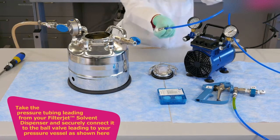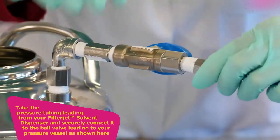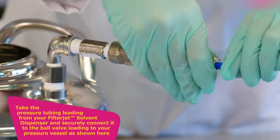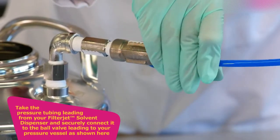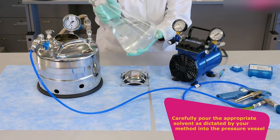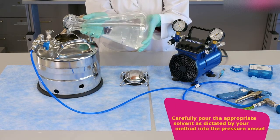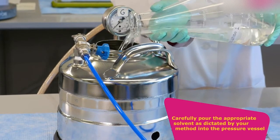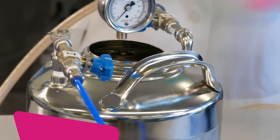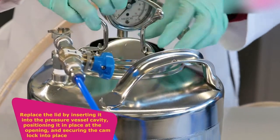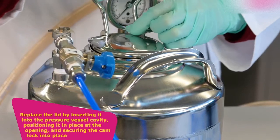Take the pressure tubing leading from your filter jet solvent dispenser and securely connect it to the ball valve leading to your pressure vessel as shown here. Carefully pour the appropriate solvent as dictated by your method into the pressure vessel. Replace the lid by inserting it into the pressure vessel cavity, positioning it in place at the opening and securing the cam lock into place.